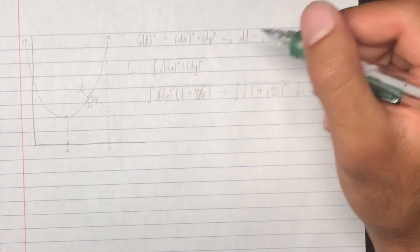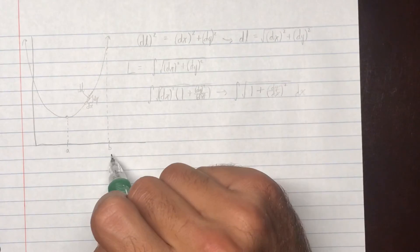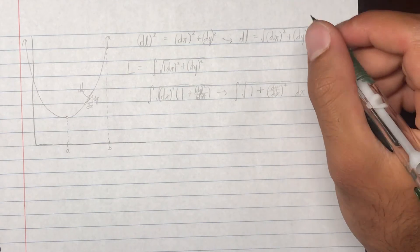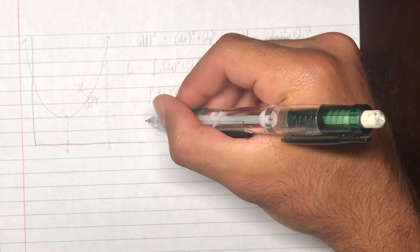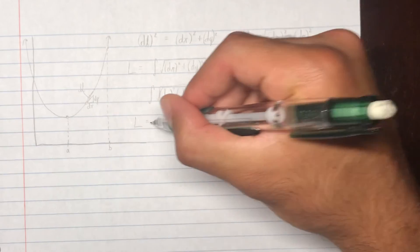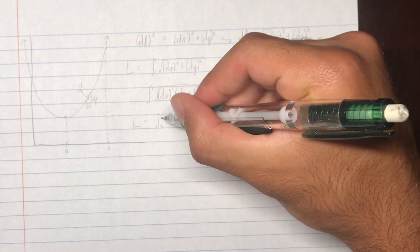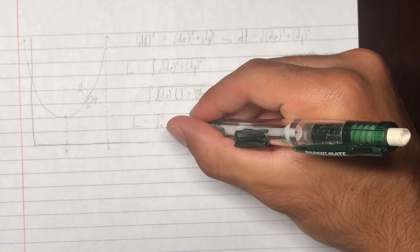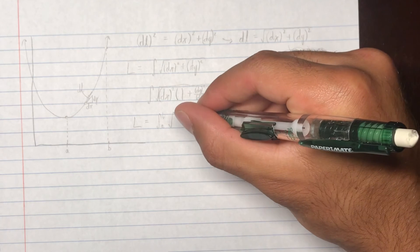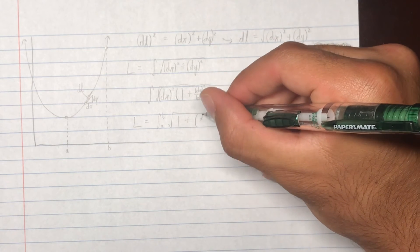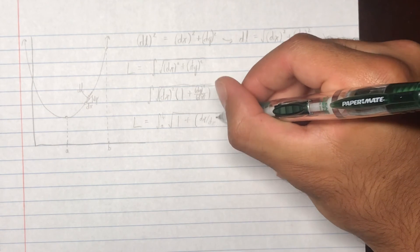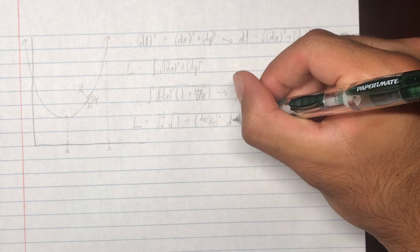So, and then last thing, you're going to add your limits of integration, which is a to b. So, this is how we get that generic arc length formula of L equals integral from a to b of 1 plus dy over dx squared with respect to x.